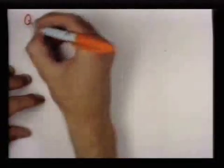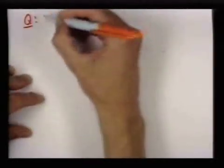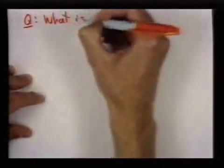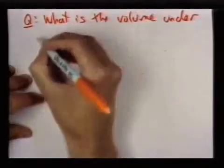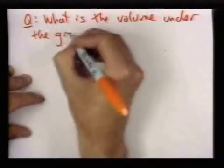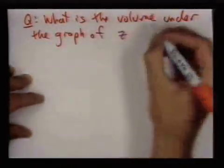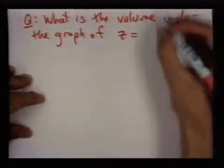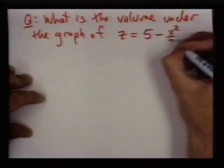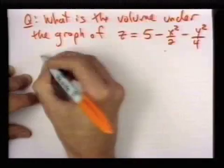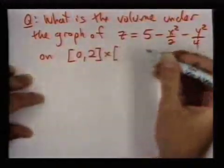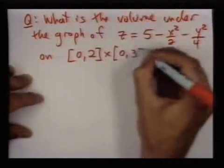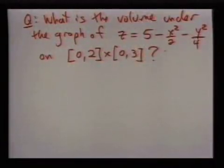So here's a question or a problem. What is the volume under the graph of this function on this rectangle? Well, first of all, what does this even mean?